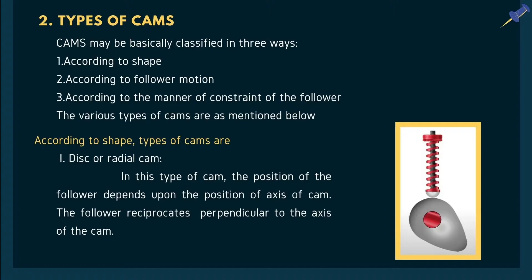We are done with the introduction of CAM and follower with the help of the diagram. Now let's discuss the second topic: types of CAMs. CAMs can be classified in three ways — according to their shape, according to the follower's motion, and according to the manner of contact of the follower.